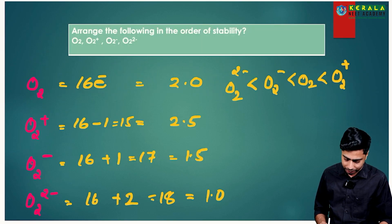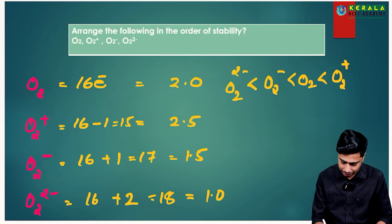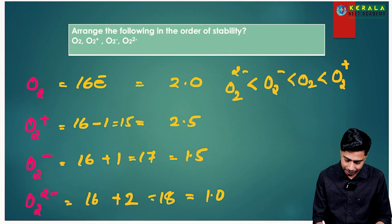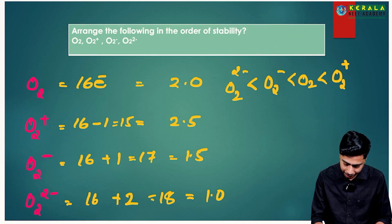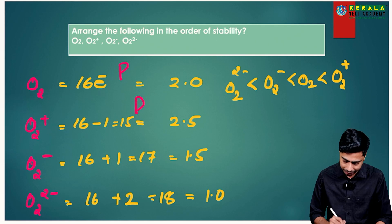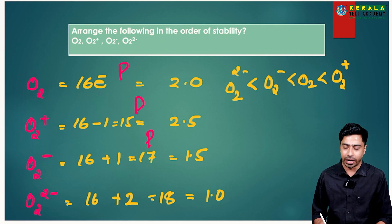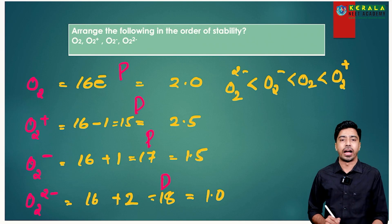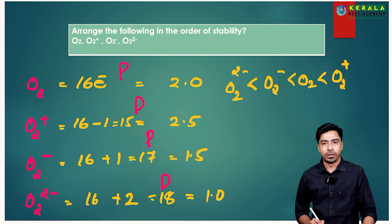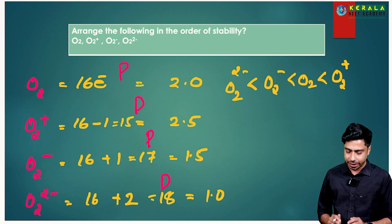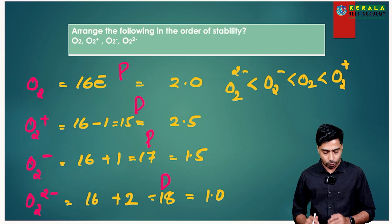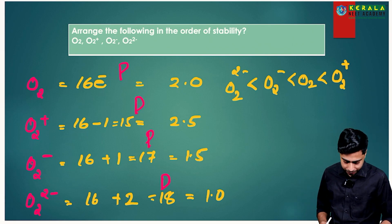Applying this: O2 has 16 electrons — paramagnetic. O2⁺ has 15 electrons — paramagnetic. O2⁻ has 17 electrons — paramagnetic. O2²⁻ has 18 electrons — diamagnetic. This is how we calculate bond order and determine magnetic behavior.